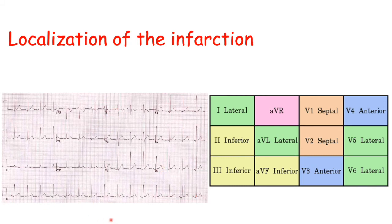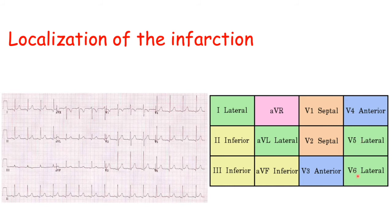Looking at how this is divided: leads 2, 3, and AVF show an inferior view of the heart. So if we see an ST segment elevation in leads 2, 3, and AVF, we know it is a heart attack in the inferior portion of the heart. Leads 1, AVL, V5, and V6 are lateral. V3 and V4 show the anterior side, particularly more toward the apex of the heart. V1 and V2 are also anterior but more focused on the septum.